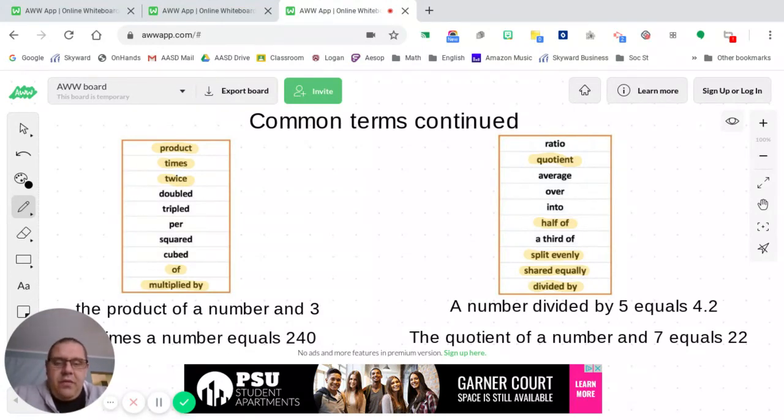So two examples I've provided for you there are a number divided by five equals 4.2. Okay? Divided by. Then our next example uses the word quotient. The quotient of a number and seven equals 22. So we have some great examples to look at.